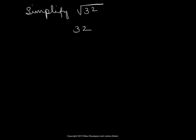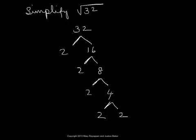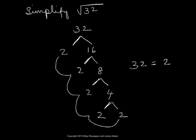In order to simplify the given radical, we write the radicand as a product of its prime factors. So we use the inverted tree diagram to find all the factors of 32. So 32 can be written as 2 times 16, and we proceed further. So 32 is 2 times 2 times 2 times 2 times 2, and we can write it as 32 equal to 2 to the fifth power.